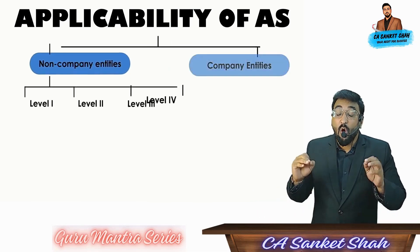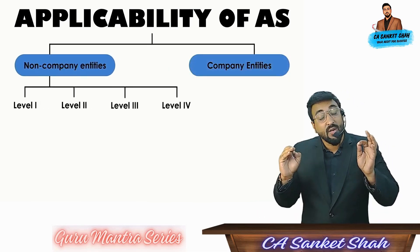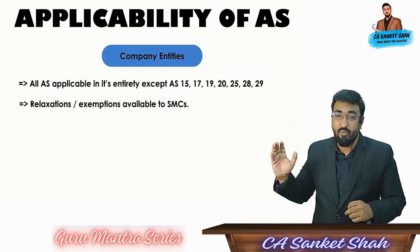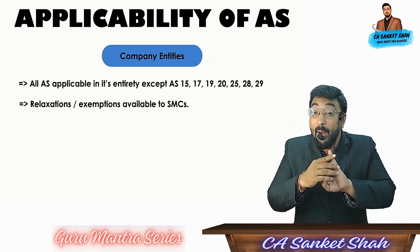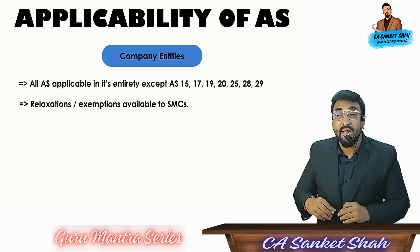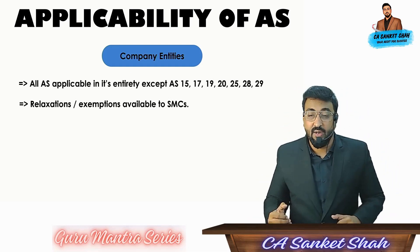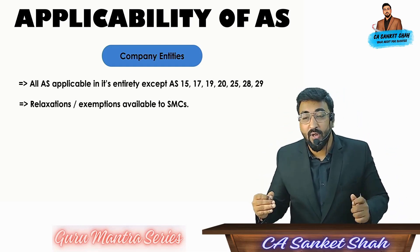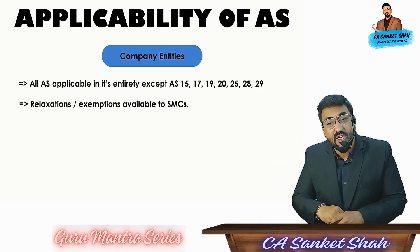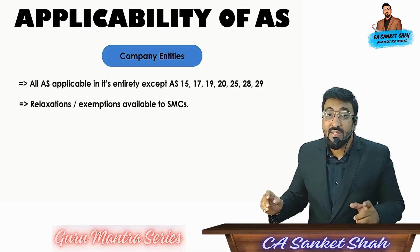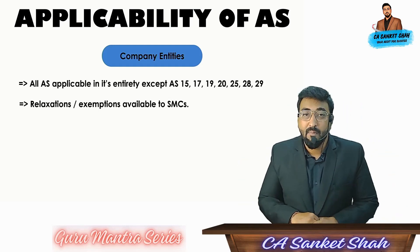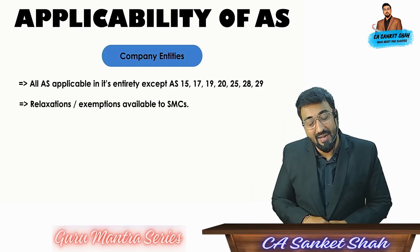Now understand corporate entities or company entities. For them, there are some relaxations for some accounting standards: Accounting Standard 15 — employee benefits; 17 — segment reporting; 19 — leases; 20 — earnings per share; 25 — interim financial reporting; 28 — impairment; and 29 — provisions, contingent liabilities, and contingent assets. So these exemptions are given to SMCs — small and medium companies. Remember, these are the applicability of accounting standards.